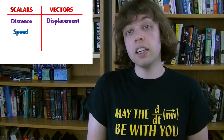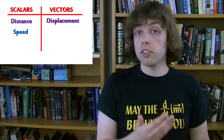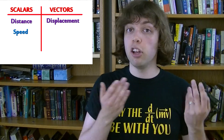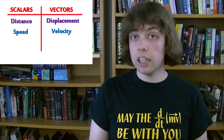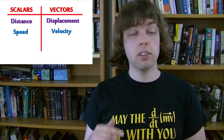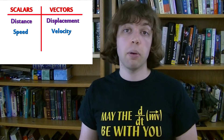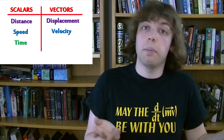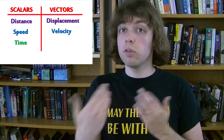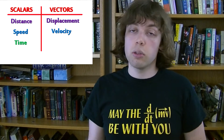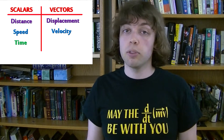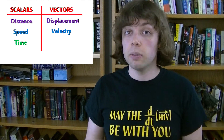Another example: speed is a scalar — 70 miles per hour — but velocity is a vector — 70 miles per hour west. Time is just time; there is no direction. Time always moves forward, so there is no vector version of time. Time is just a scalar.